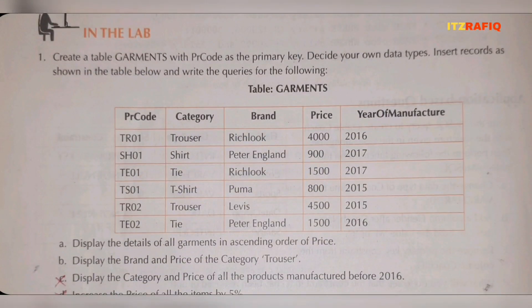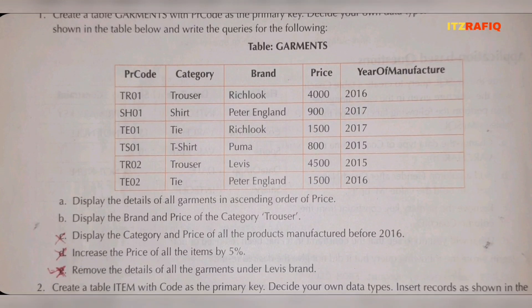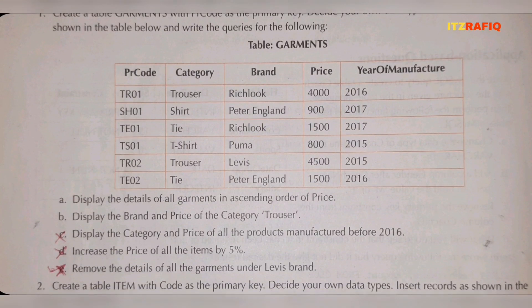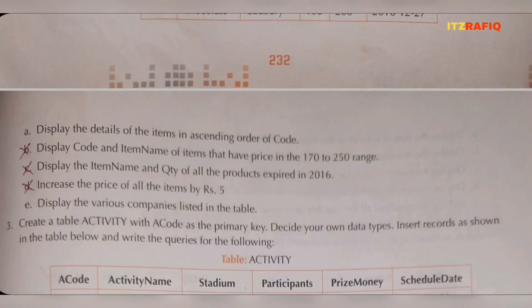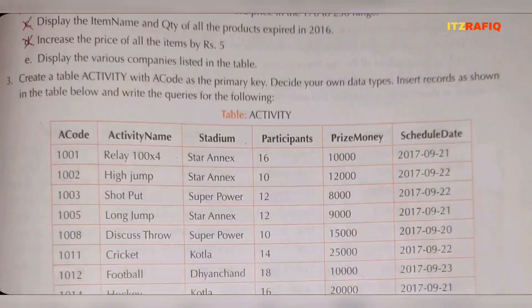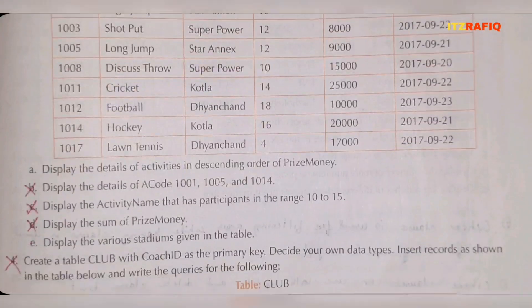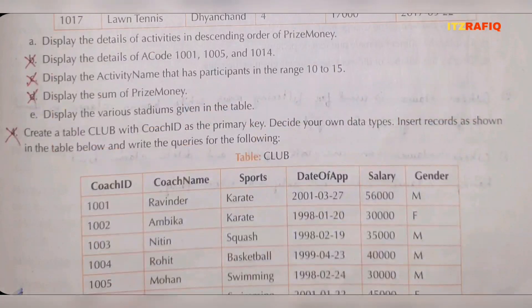Now we move to the lab questions, from which questions might also come. Question 1: only A and B required. Question 2: only A and E required. Question 3: only A and E required. Question 4 and 5 are not required.